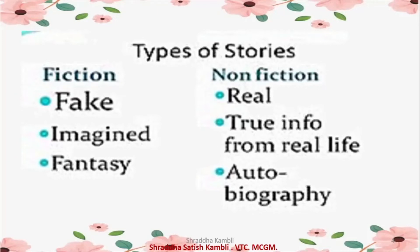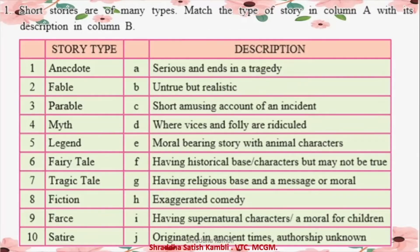We have this exercise in our warming-up part where it says short stories are of many different types. The name of the story type is written in column A and the description is written in column B. Column A includes: anecdote, fable, parable, myth, legend, fairy tale, tragic tale, fiction, farce, and satire. I will leave you to pause the video and try to match the answers yourself, then come back and check with mine.